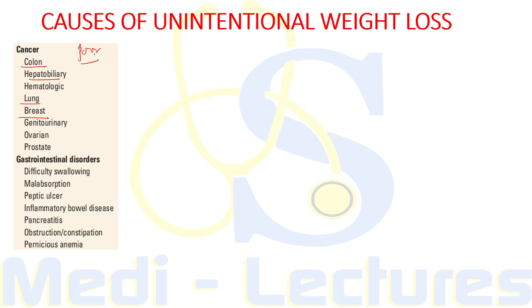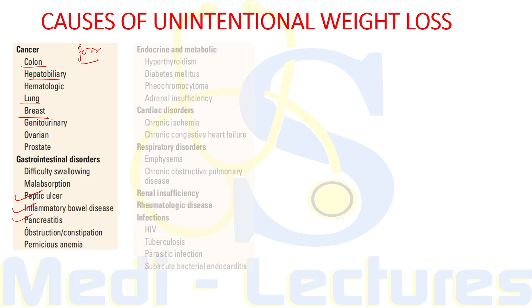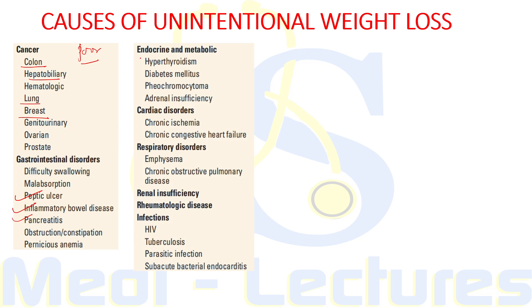In addition to malignancy, GI diseases are among the most prominent causes of unintentional weight loss, especially peptic ulcer disease, inflammatory bowel disease, and pancreatitis. Among endocrine and metabolic conditions, hyperthyroidism and diabetes mellitus are very common. Hyperthyroidism in the elderly can present with apathetic thyrotoxicosis, in which weight loss is the presenting complaint. Diabetes mellitus, by glycosuria, can lead to significant weight loss and calorie loss.